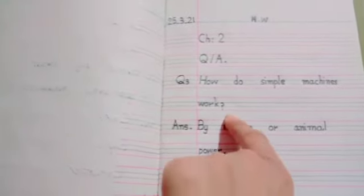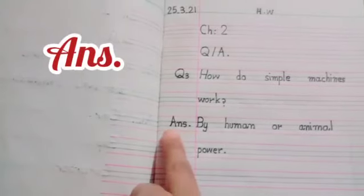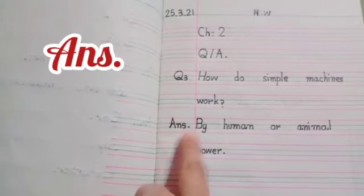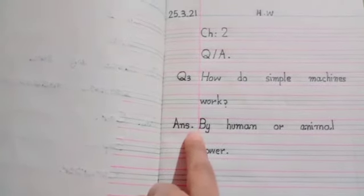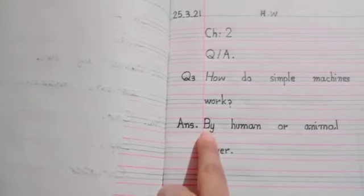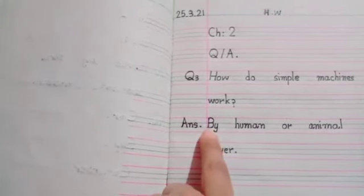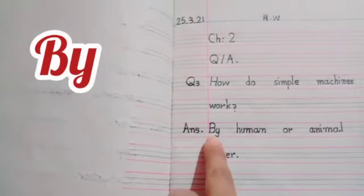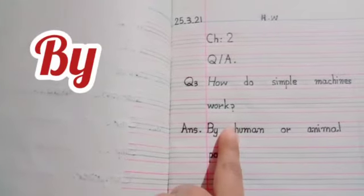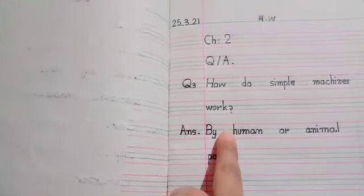Now we write the answer. Write in the margin and box: A-N-S answer, then put your full stop. And now we start the answer. First letter is capital: B-Y by. And again take one finger distance and write H-U-M-A-N human. By human.